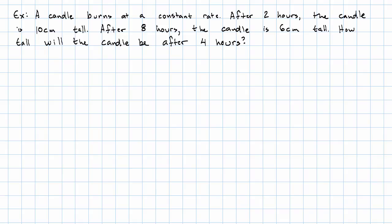Here we have a question where a candle burns at a constant rate. After two hours, the candle is 10 centimeters tall. After eight hours, the candle is 6 centimeters tall. And we want to decide how tall will the candle be after four hours. Our variables are T, the time in hours. And as usual, time is going to be independent. Our other variable is H, the candle's height in centimeters. And since T is independent, H will be dependent.